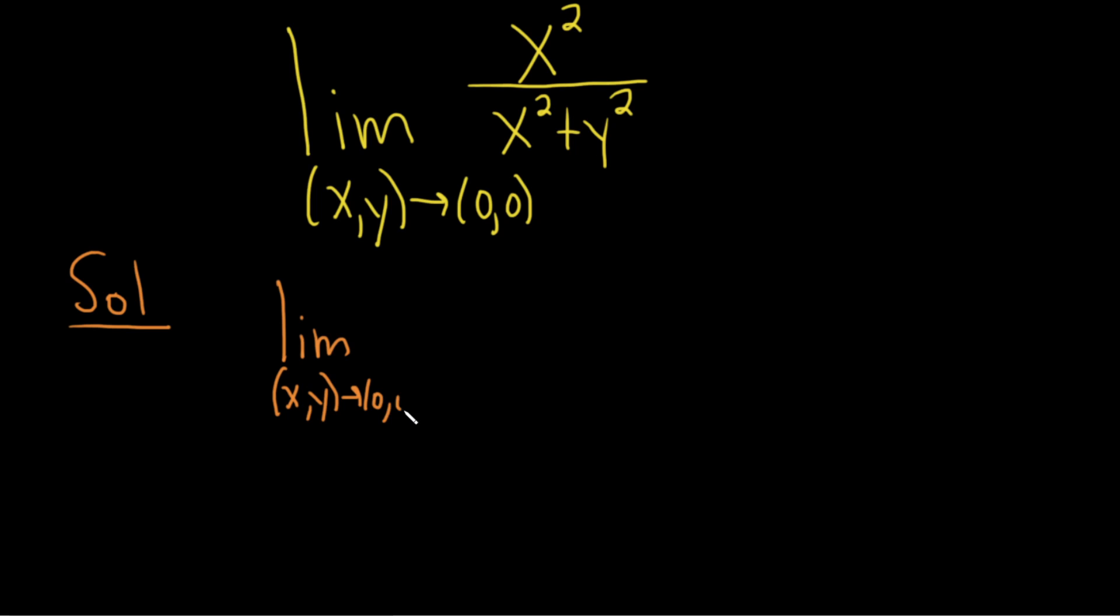So I'm going to go ahead and rewrite the problem here: x squared over x squared plus y squared. And let's first approach from the y-axis. So if we set x equal to 0 in our limit, we're basically approaching from the y-axis. And in this case, this is going to be 0 squared over 0 squared plus y squared.